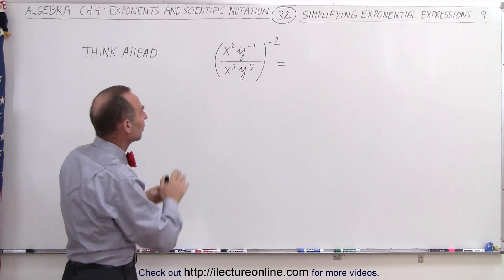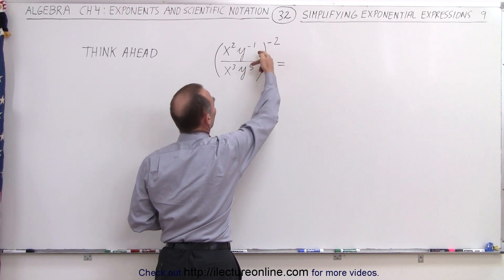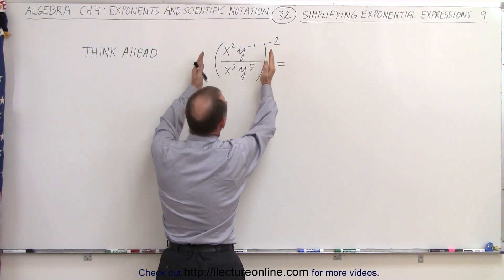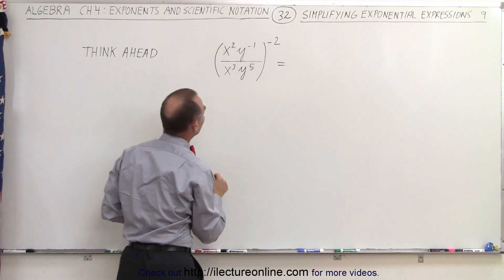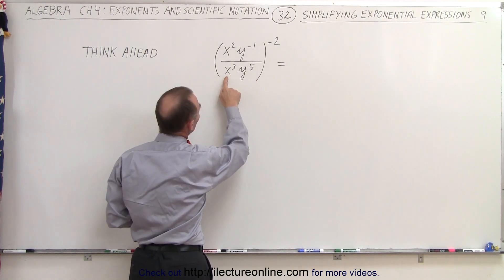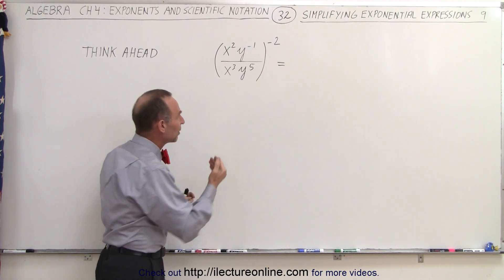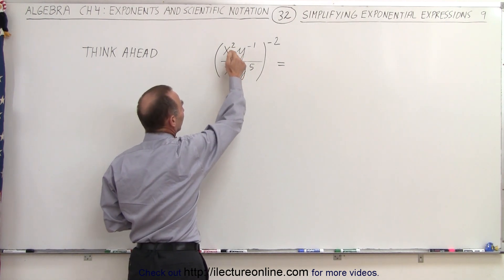When we take a look at this, eventually we know we're going to have to flip the equation around to make that into a positive. But if we ignore that for a moment and just look at what's inside the parentheses, notice we have an x cubed in the denominator and an x squared in the numerator. So if we bring the x squared down, it becomes x to the minus 2.